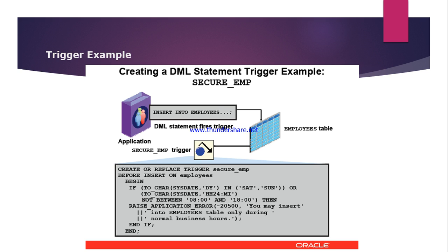Another advantage is enforcing referential integrity when child or parent tables are on different nodes of a distributed system. We can also publish information about database events or user events, and log events. Additionally, we can enforce complex business rules using triggers — rules that cannot be enforced by constraints.